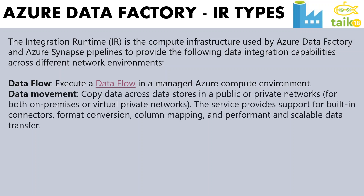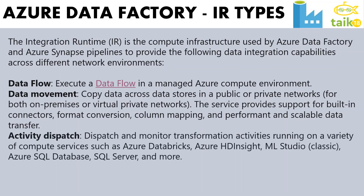Next is data movement. You can copy data across data stores in a public or private network for both on-premises or virtual private networks. The service provides support for built-in connectors, format conversion, column mapping, and scalable data transfer. Activity dispatch means you can dispatch and monitor transformation activities running on a variety of compute services such as Azure Databricks, Azure HD Insight, Machine Learning Studio, Azure SQL Database, Azure SQL Server, and many more.